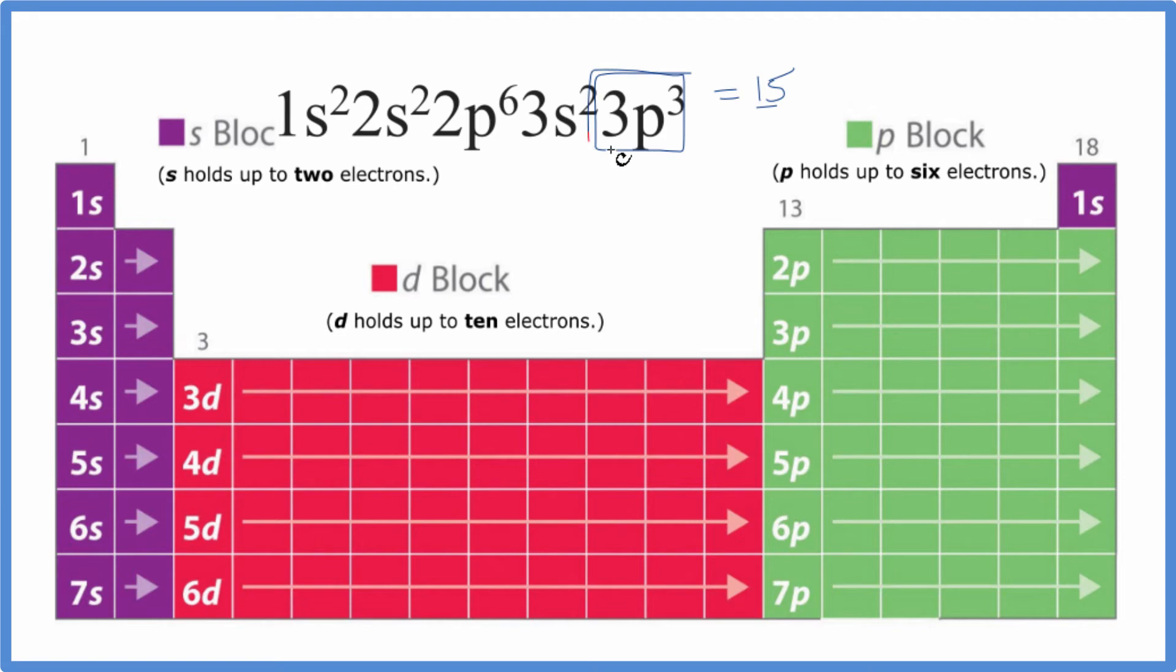We're looking for 3p3. So we've got the third row, or period here, and we have 3p1, 3p2, 3p3. So this element right here, that's going to have this electron configuration.